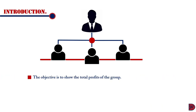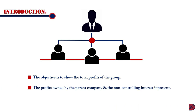The objective is to show the total profits made by the group and then show the extent to which these profits are owned by the parent company and that which is to be allocated to the non-controlling interest, in the case where the parent does not have absolute control over the subsidiary.